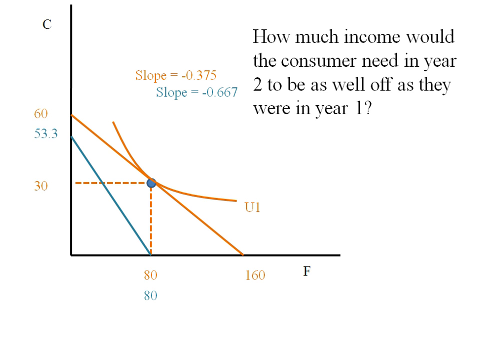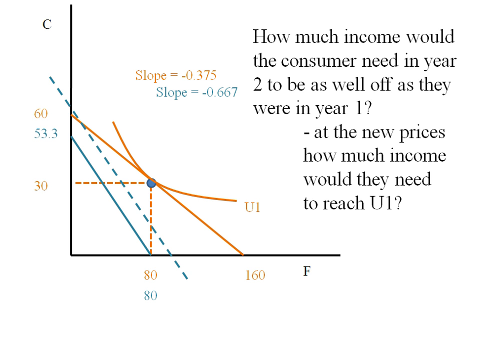The question here is how much income would this consumer need in the second period to be as well off as they were originally? What we'll do is we'll take that new budget line and we'll bring it out until it's just tangent to our original indifference curve.